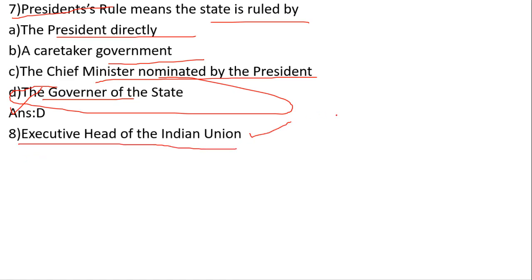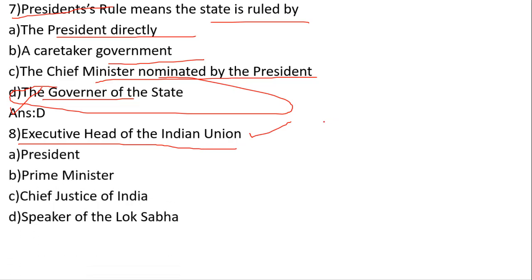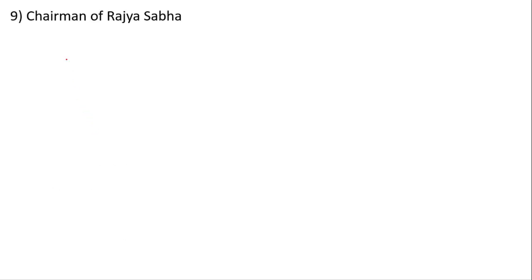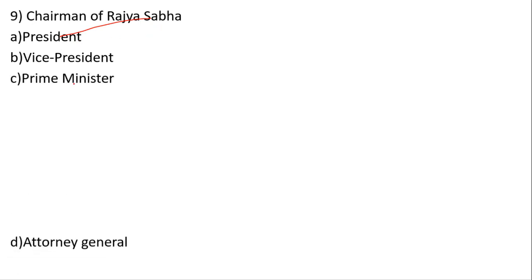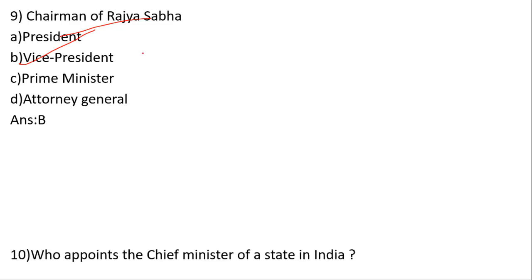Who is the Executive Head of the Indian Union? Options: President, Prime Minister, Chief Justice of India, Speaker of the Lok Sabha. The President of India is the Executive Head of the Indian Union. Who is the Chairman of Rajya Sabha? That is the Vice President — correct answer is B, Vice President.